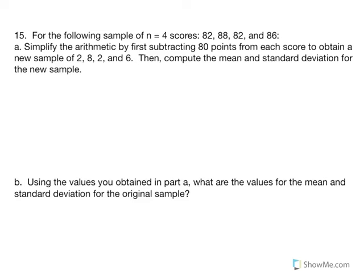For the next example, number 15, the following sample of 4 scores — 82, 80, 82, and 86 — must be considered. Simplify the arithmetic by first subtracting 80 points from each score to obtain a new sample of 2, 8, 2, and 6. All we've done is created a new distribution by subtracting 80 points, applying a constant — subtracting a constant from all the scores.